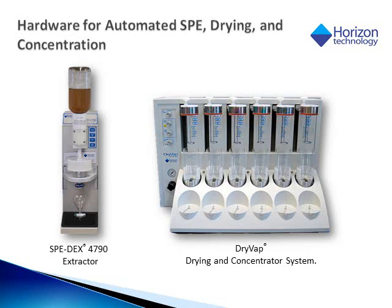Shown on the left is the SPEEDX 4790 disk cartridge extractor and on the right is the DRIVAP system. The DRIVAP system combines membrane sample extract drying and extract concentration down to a 1-milliliter volume automatically. The SPEEDX 4790 processes one sample at a time and can be ganged in groups of up to 8, while the DRIVAP system can handle from 1 to 6 samples independently or in batch mode.